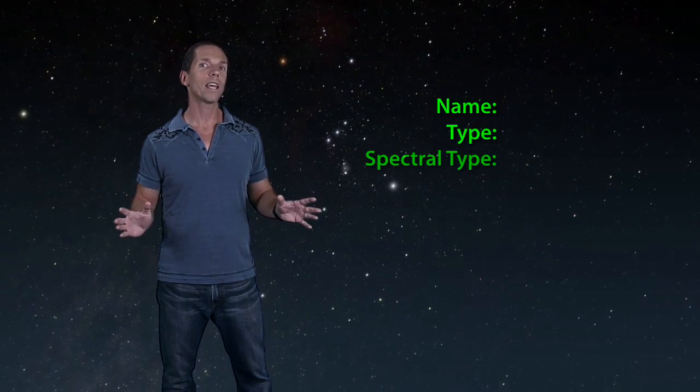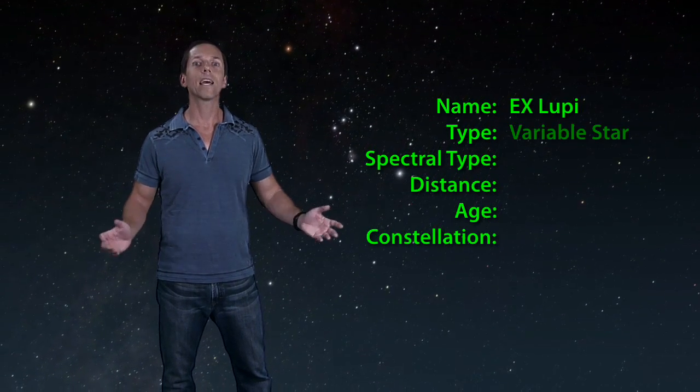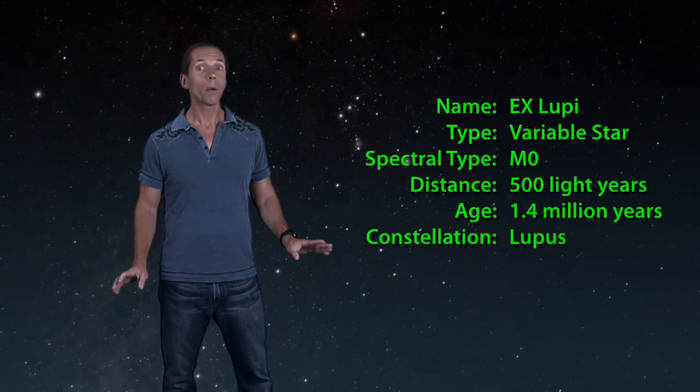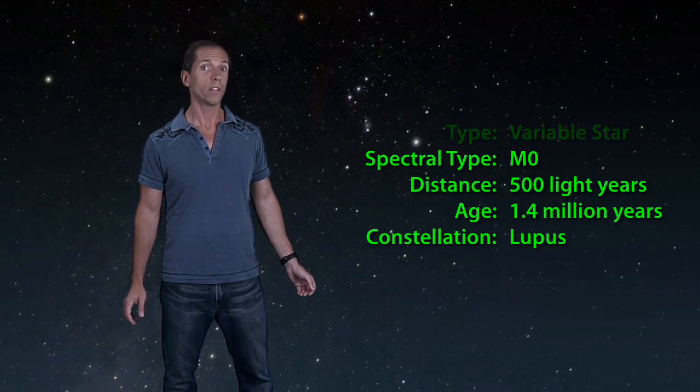So it's a rare treat when astronomers actually catch a star in the act of doing something unexpected, especially when it helps solve a long-standing puzzle. The star of this special event is about 500 light-years away and known as EX Lupae. It's probably a pretty close match to what our own Sun was like in its infancy about 5 billion years ago.